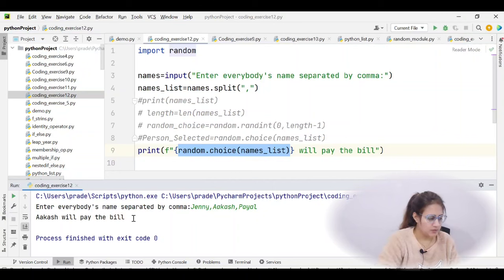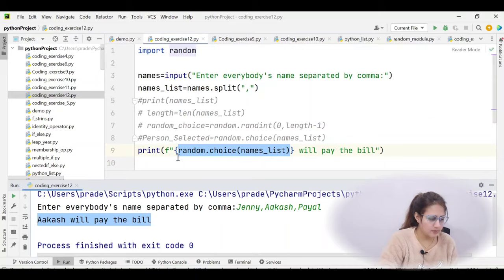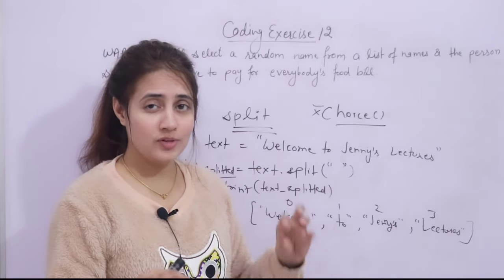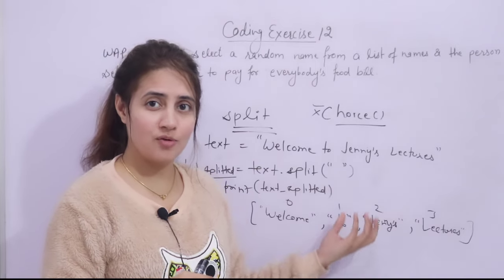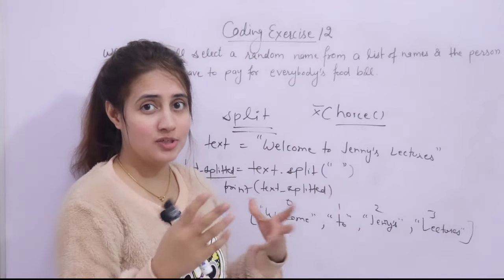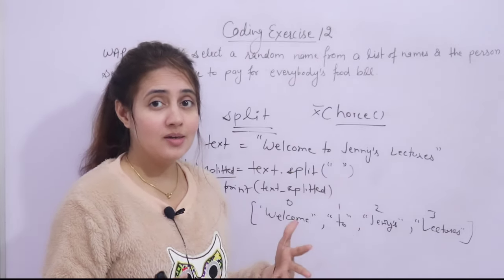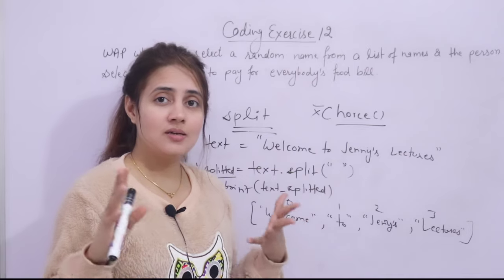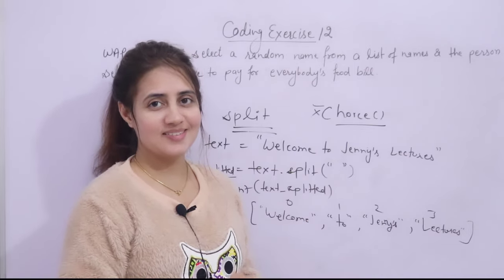I hope this is clear — how to use the random module and random functions to solve a problem. We explored two approaches: using randint with index-based access, and the simpler random.choice method. In the next video we will see nested lists. Till then, bye bye, take care.